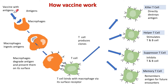Then T cells come into play. T cells are also soldier cells of the body's immune system. T cells bind with the macrophage's antigen-presenting surface via their receptors and make clones of T cells, such as killer T cells, helper T cells, suppressor T cells, and memory T cells.